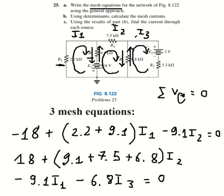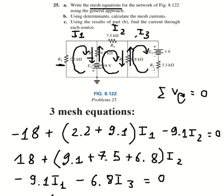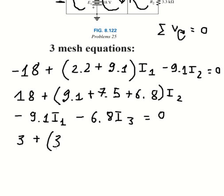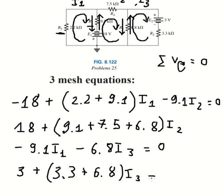We can see this mesh hits the positive side of the source, so we have a 3-volt source. We have 3.3 plus 6.8. I number two is in the opposite direction here, so we subtract 6.8 times I number two. That completes the third mesh equation.